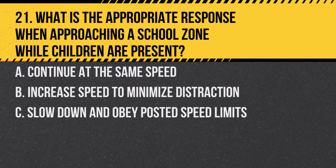Question 21. What is the appropriate response when approaching a school zone when children are present? A. Continue at the same speed. B. Increase speed to minimize distraction. C. Slow down and obey posted speed limits. Answer: C. Slow down and obey posted speed limits. School zones require reduced speeds for the safety of children.